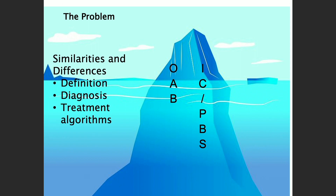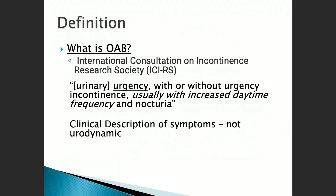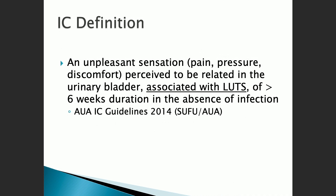I want to talk about the similarities, definitions, how we diagnose, and some treatment algorithms to help differentiate. What exactly is overactive bladder? Looking at the definition from the International Consultation on Incontinence Research Society — a group of content experts — they define it as urinary urgency with or without urgency incontinence, usually with increased daytime frequency and nocturia. This is a clinical definition; there's no mention of urodynamics. Taking the history and clinical definition is what's important.